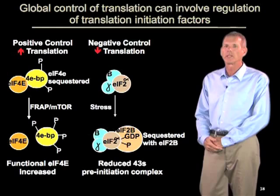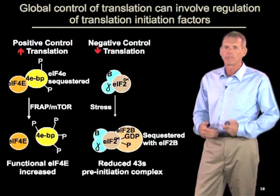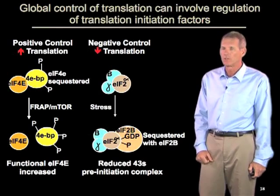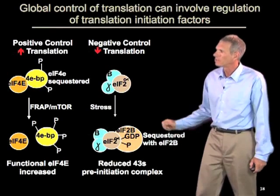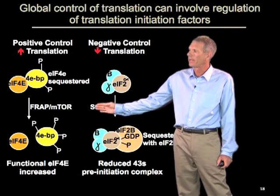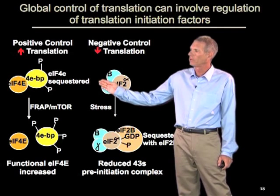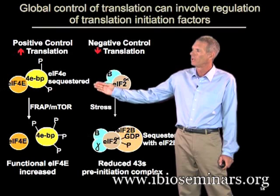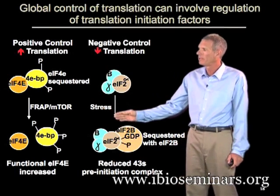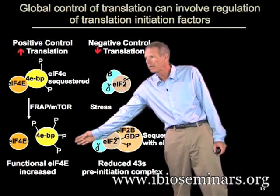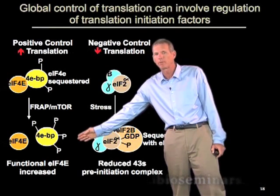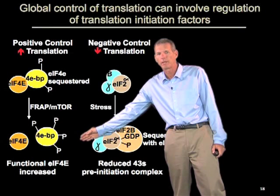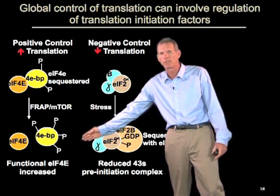Translation can also be regulated in a global way by alterations in the functions of specific initiation factors. For example, when growth is stimulated, the TOR pathway is enhanced, and that leads to phosphorylation of a protein that binds the cap binding protein. When that protein is phosphorylated, it lets go of the cap binding protein, resulting in more free cap binding protein, which promotes the loading of initiation factors on the 5' end of mRNAs and increases translation generally.